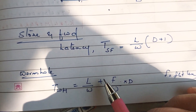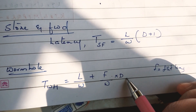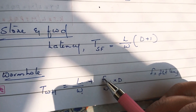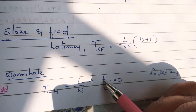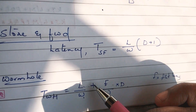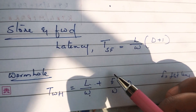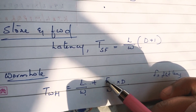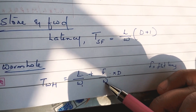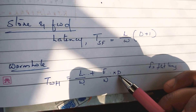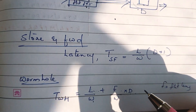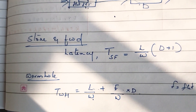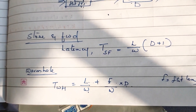Wormhole routing latency is L/W + (f/W) × d, where L is the length of the packet, W is the bandwidth, f is the flit length, and d is the distance between source and destination. Let's solve this latency equation.